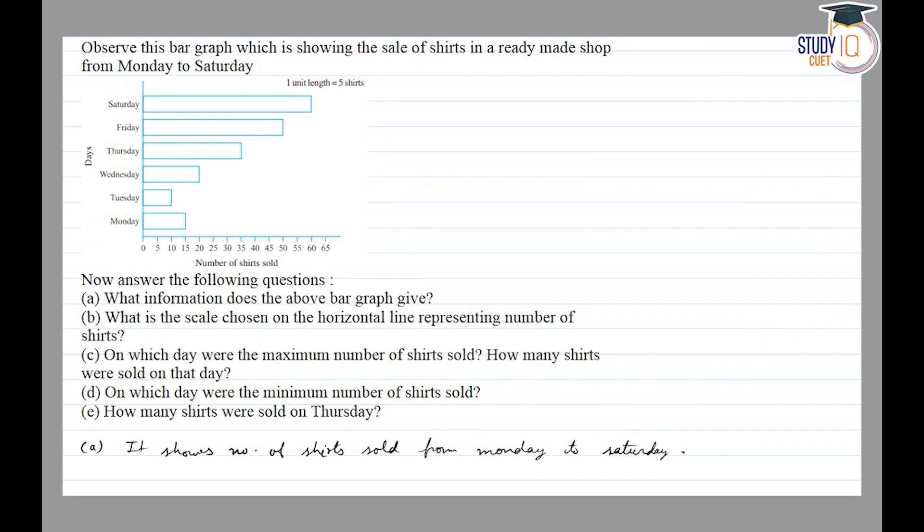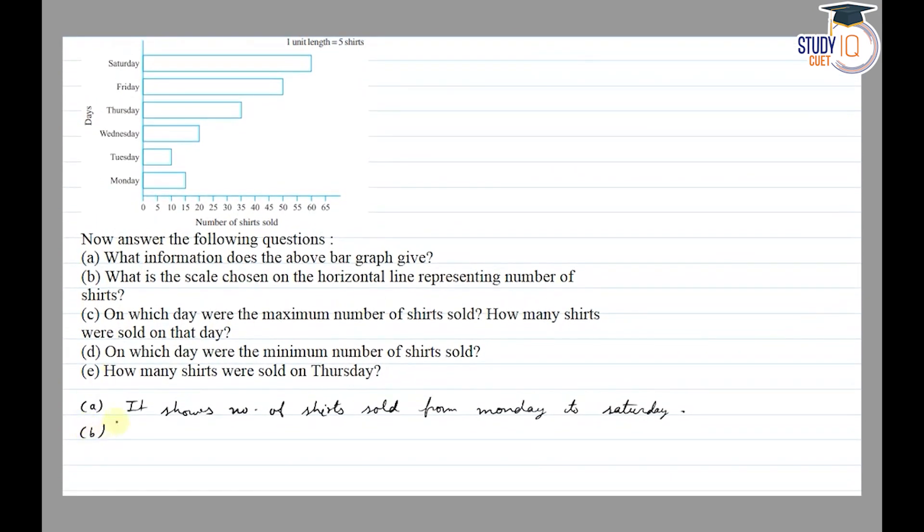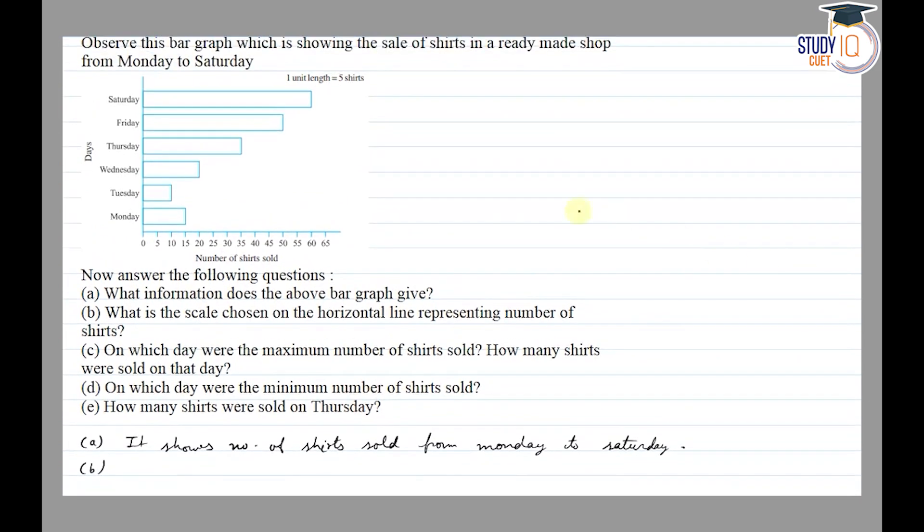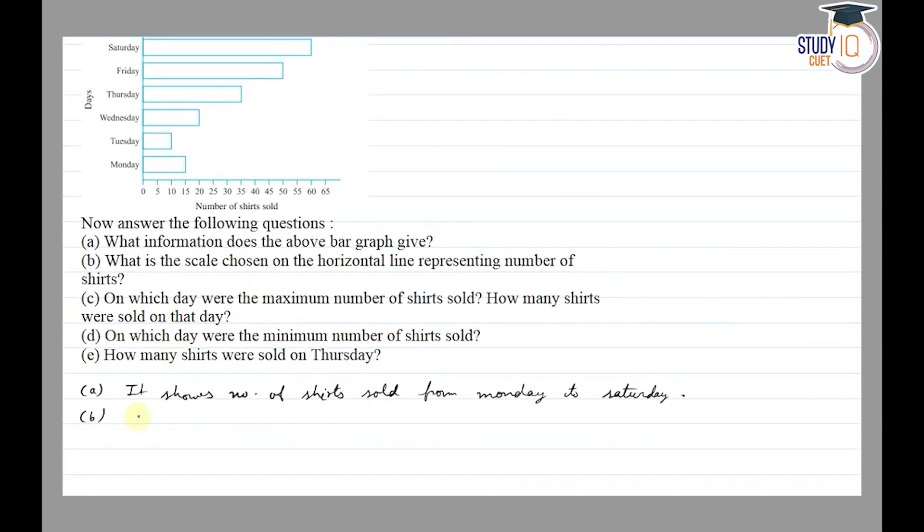Next, part (b): what is the scale chosen on the horizontal line representing number of shirts? The scale given is 1 unit length equal to 5 shirts.